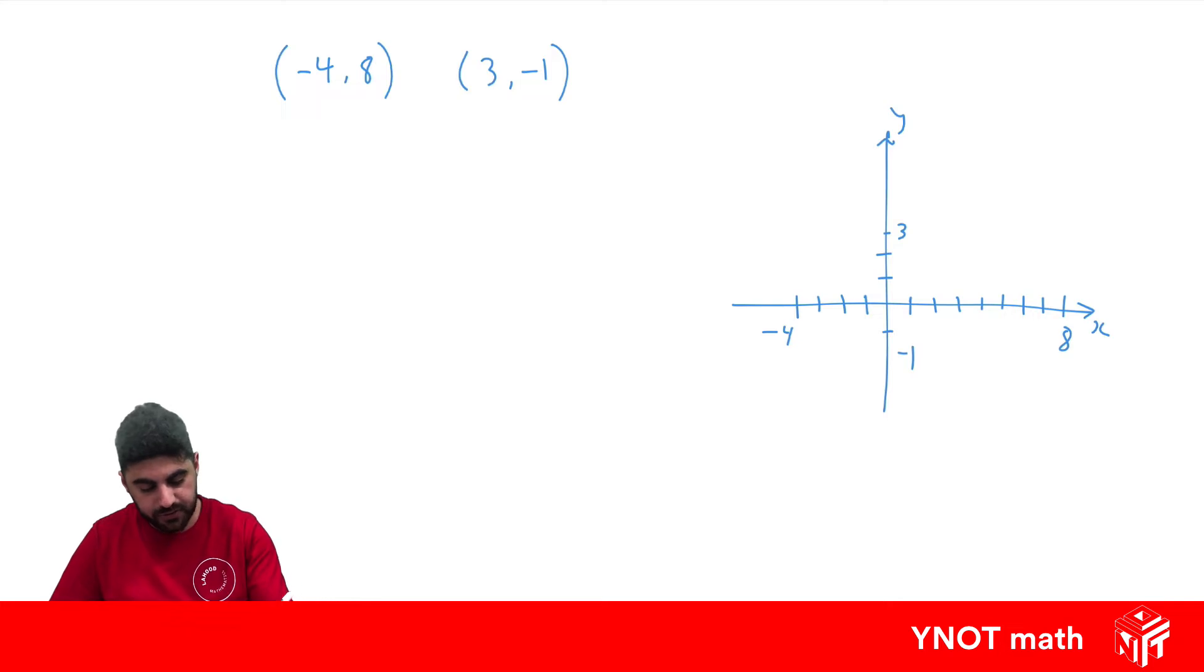So our two points, minus 4, 8, went the other way. 4, 5, 6, 7, 8. 8's up there. Minus 4, 8 is up there. And 3, minus 1 is over here.